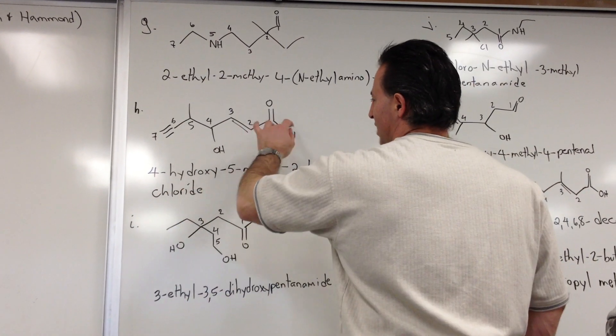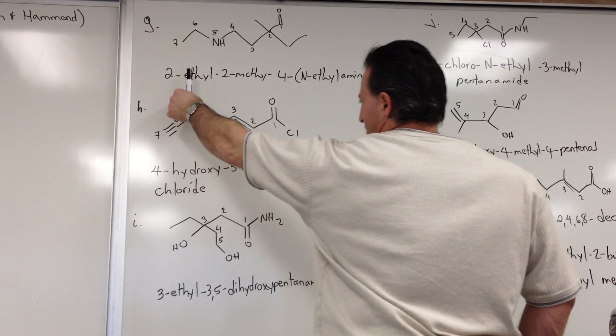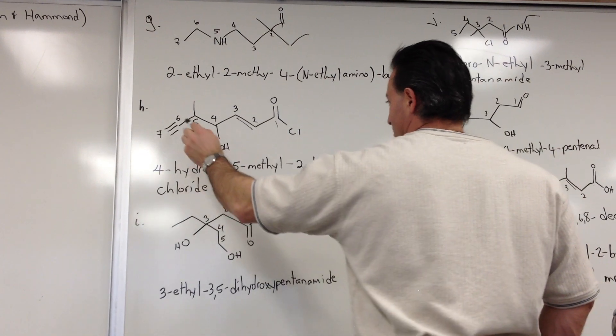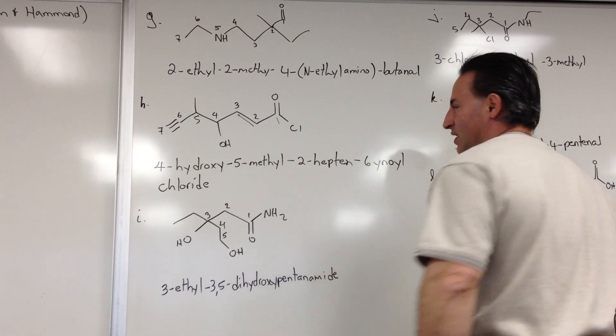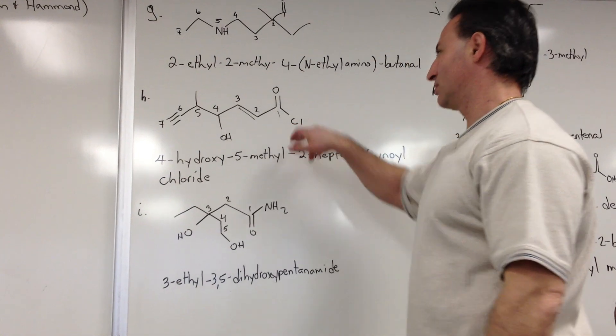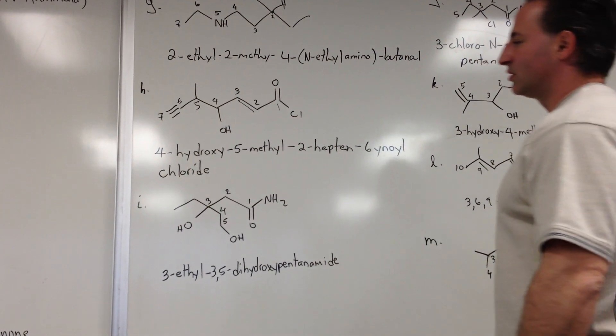This one is a 7-carbon chain with a hydroxy group at the 4th position, a methyl group at the 5th position, a double bond at the 2nd position, a triple bond at the 6th position, that's why we have 6-yne, and oyl to show that it's an acyl chloride. And then there's a chloride to show that that is a chlorine, so 4-hydroxy-5-methyl-2-hepten-6-ynoyl chloride.